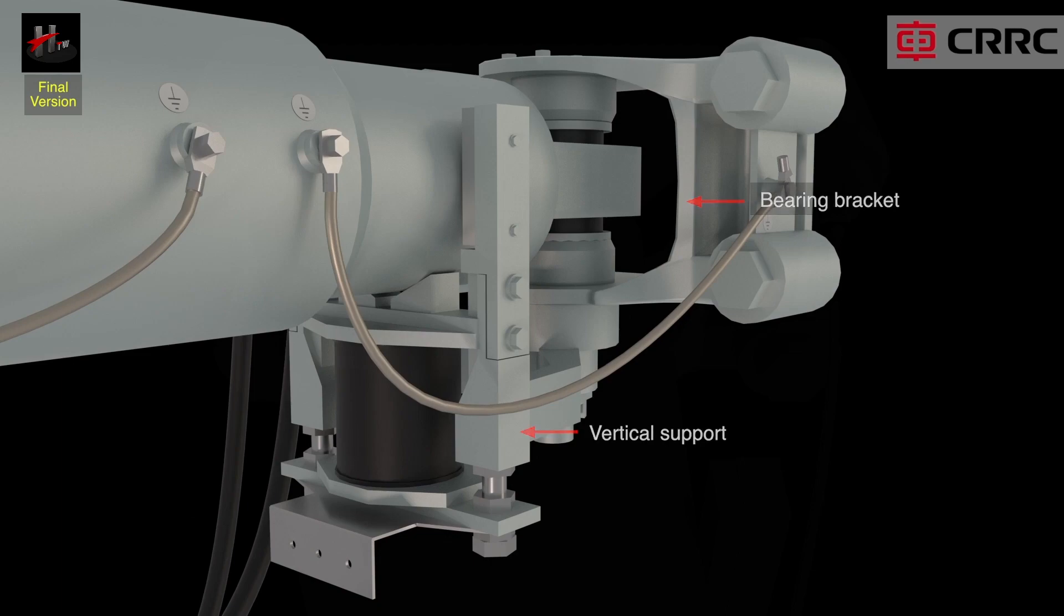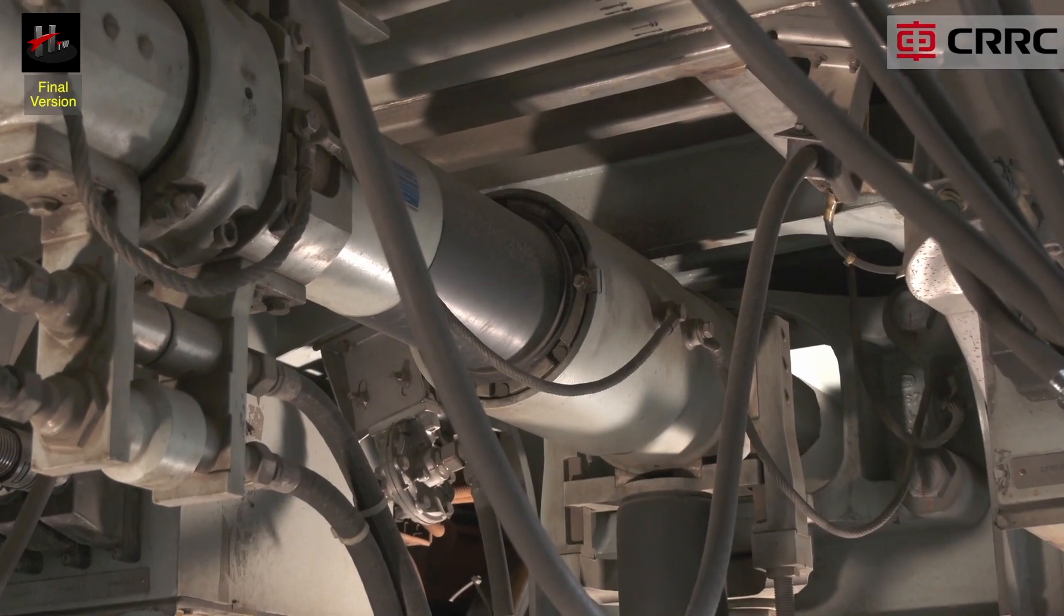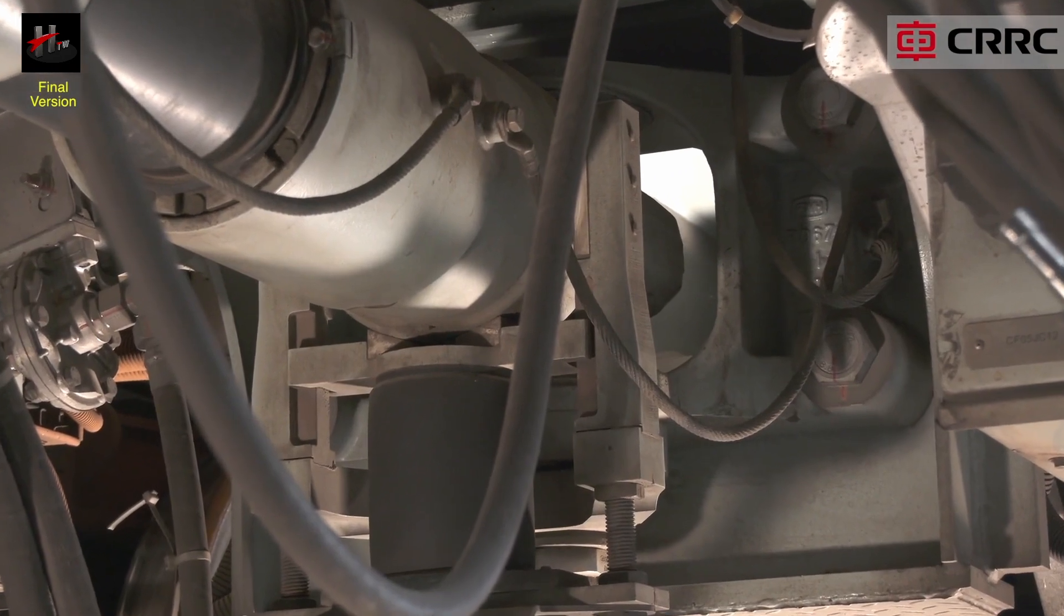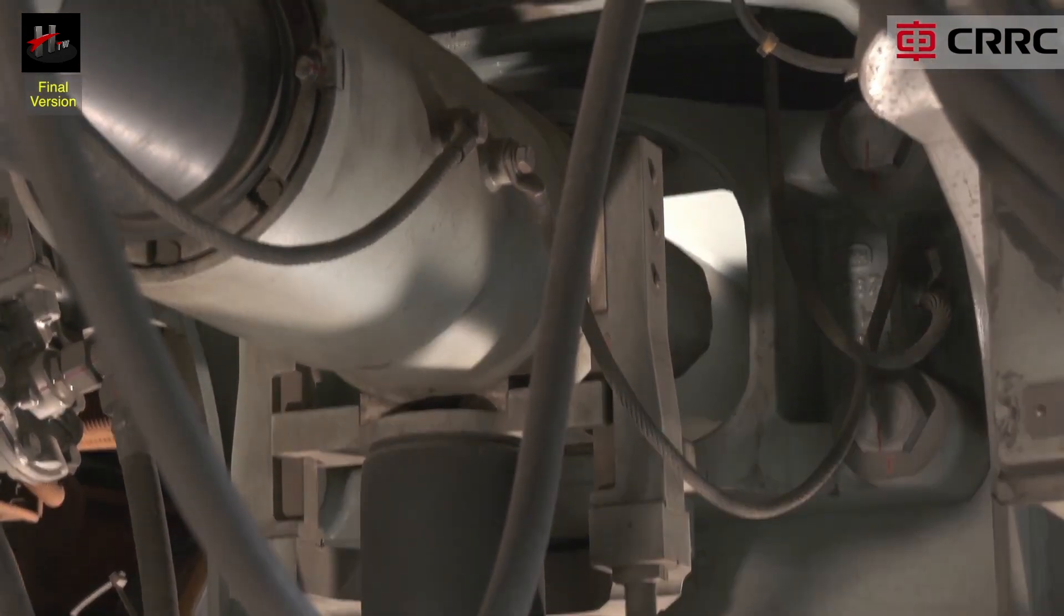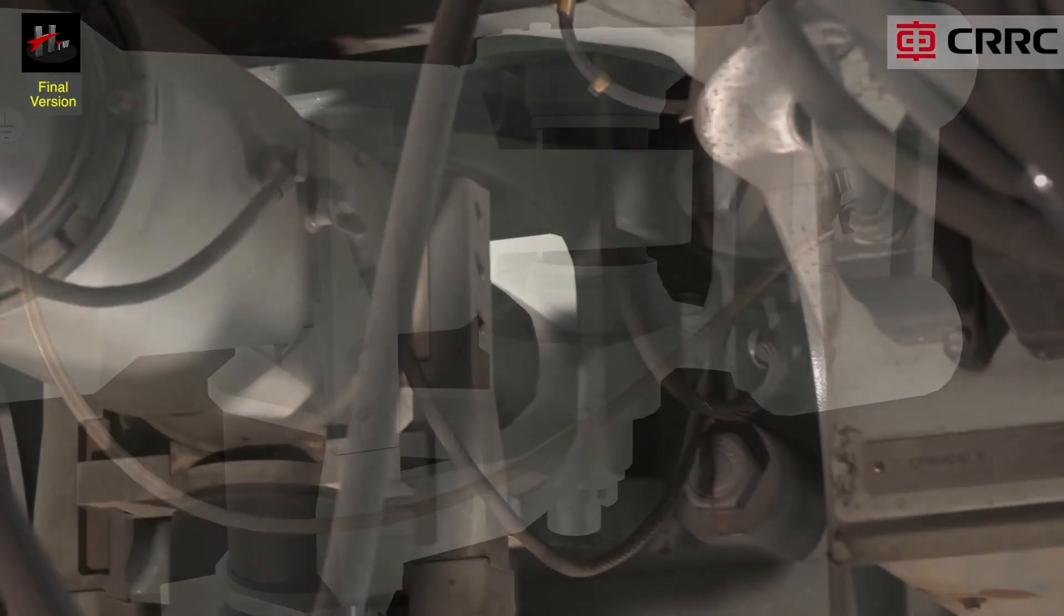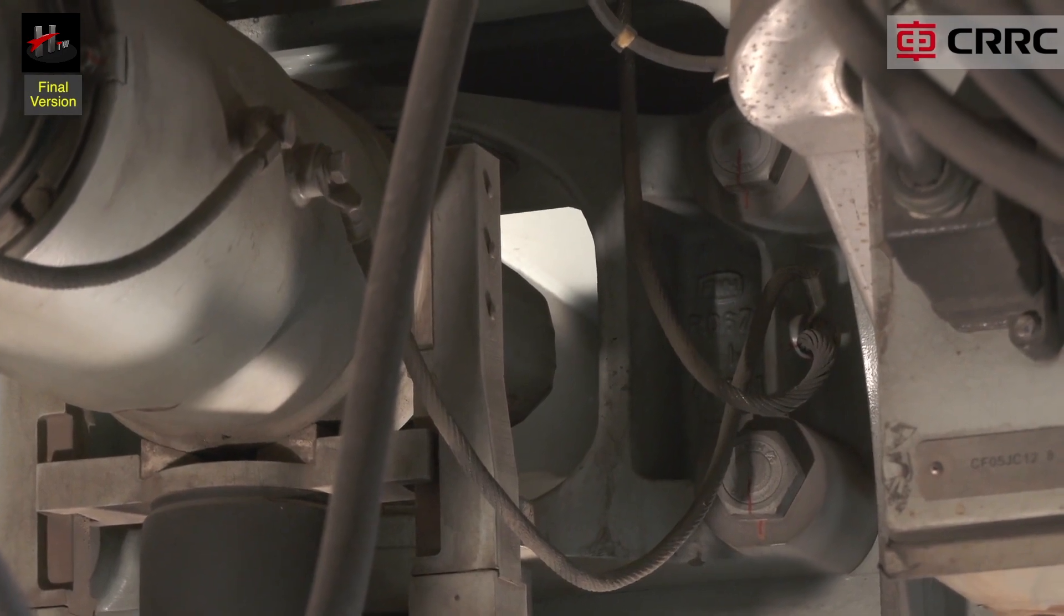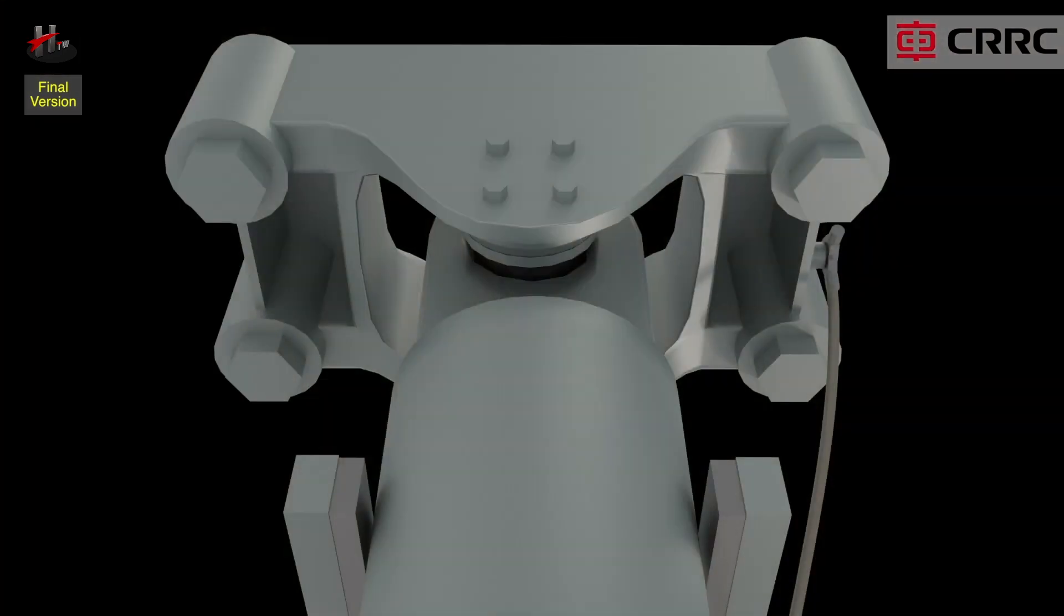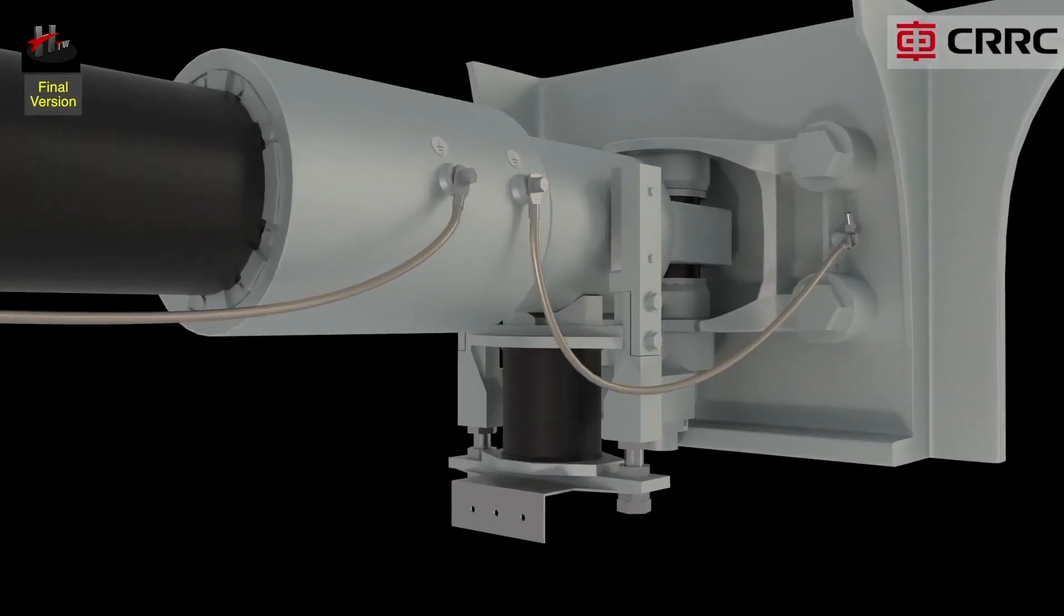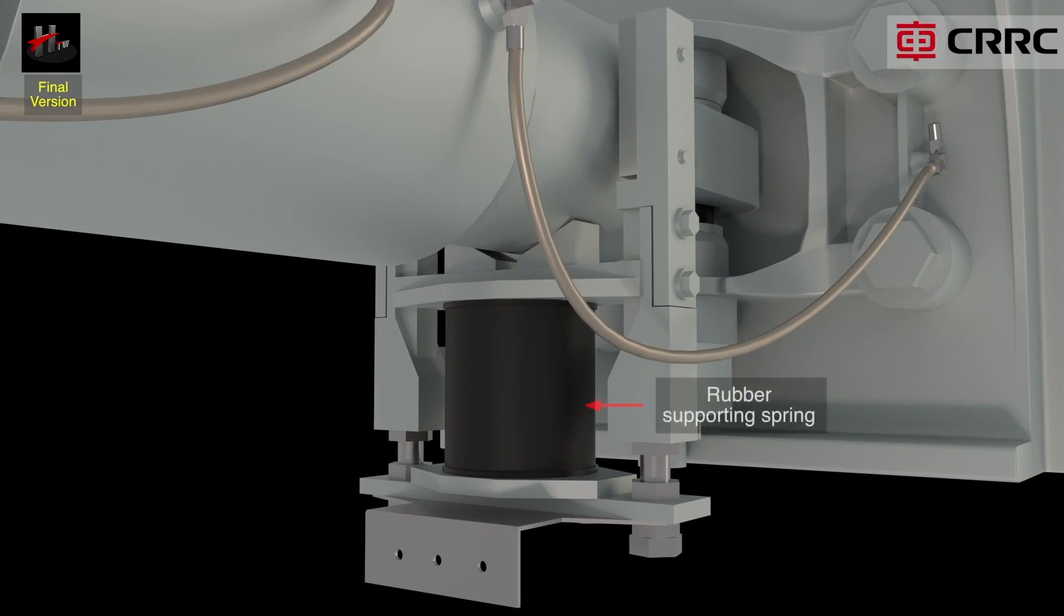The bearing bracket connects the coupler and the vehicle. The coupler shank is supported by a rubber-supporting spring. It is connected to the bearing bracket via a vertical support.